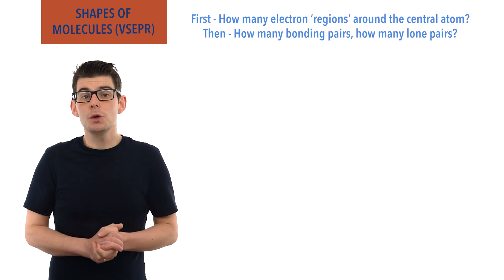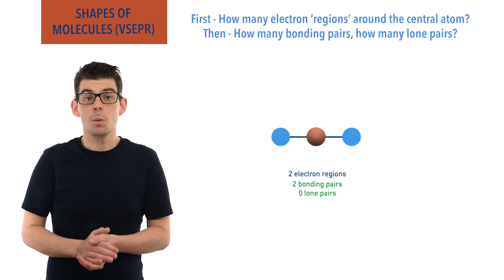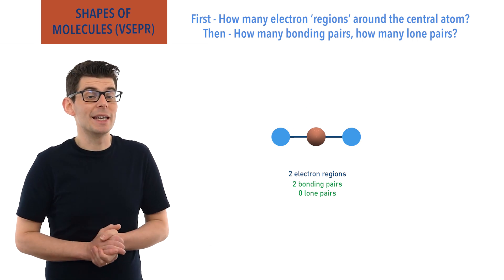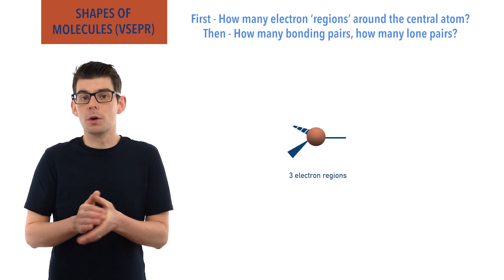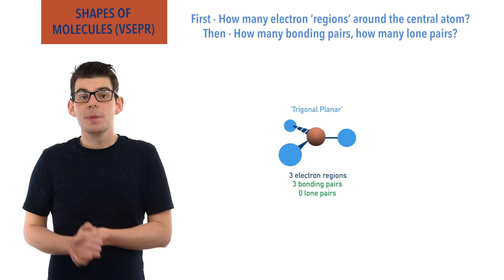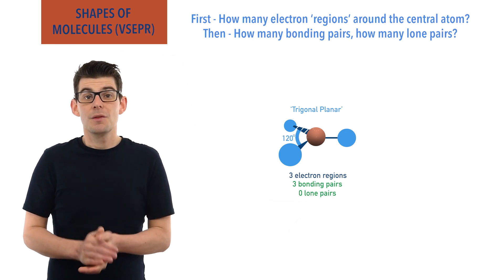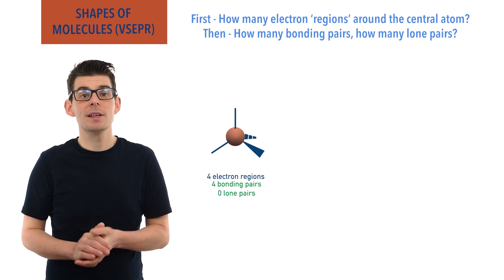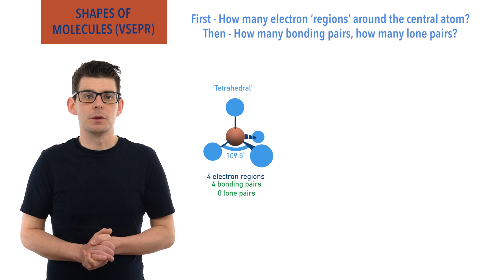For example, two bonding pairs and no lone pairs would give a linear shape with a bond angle of 180 degrees. For three electron regions where there are no lone pairs — only three bonding pairs — trigonal planar, with an angle between each bond of 120 degrees. For four electron regions where there are no lone pairs — only four bonding pairs — tetrahedral, with bond angles of 109.5 degrees.